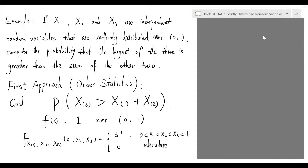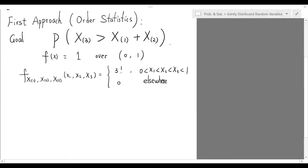We begin by recalling a few basic facts. Firstly, the probability density function for a random variable uniformly distributed over the interval is simply the constant function 1 over that interval. As a consequence, the joint density function of the order statistics of three random variables is given by 3 factorial when x1, x2, and x3 satisfy the ordering condition, and 0 elsewhere.